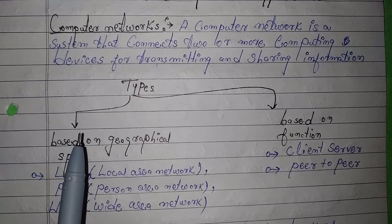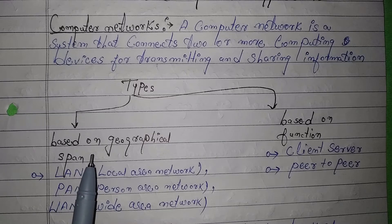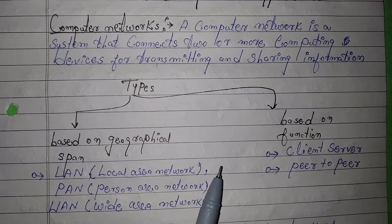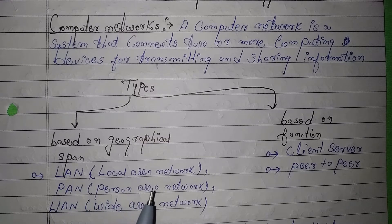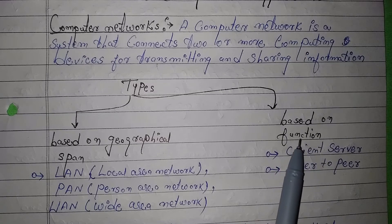Now we have the types of computer networks based on geographical span, that is, distance. There are three types: LAN, PAN, and WAN. LAN is Local Area Network. PAN is Personal Area Network, which is used in our personal home or workspace and we can connect our computer, mobile phone, etc. WAN is Wide Area Network, which covers large distances where many computers are connected.